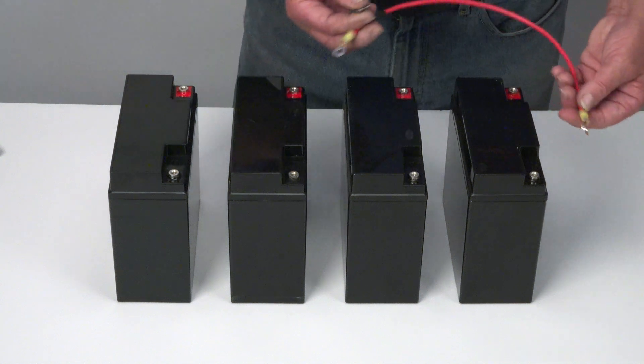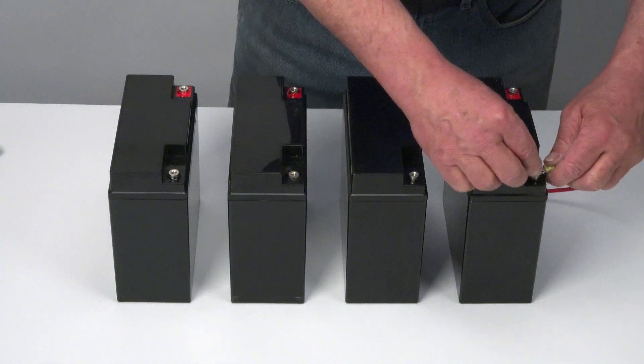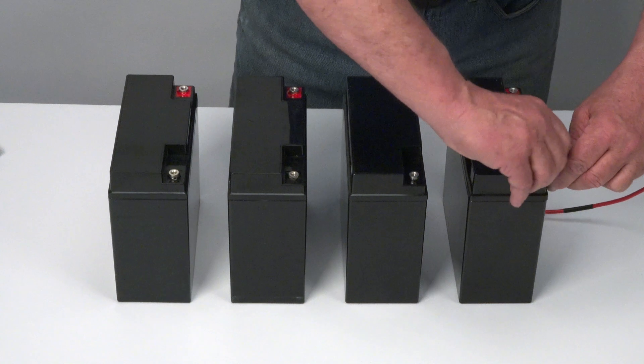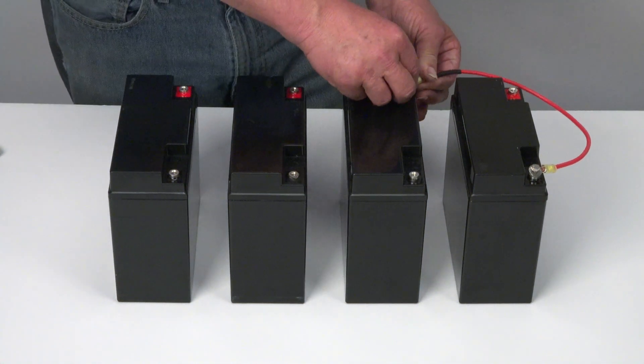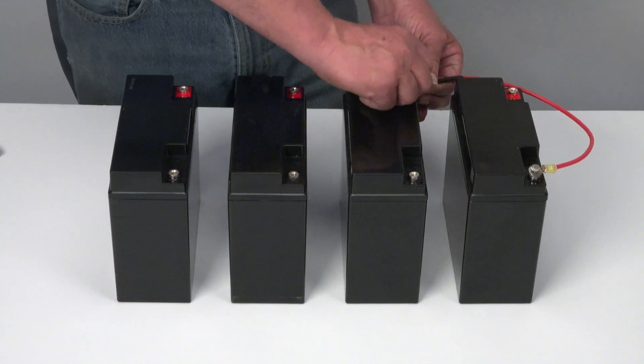Simply connect a jumper wire between the negative terminal on the first battery and the positive terminal on the second battery. It will effectively make a 24 volt battery array.